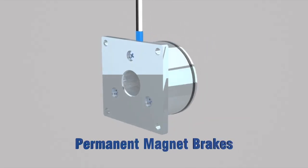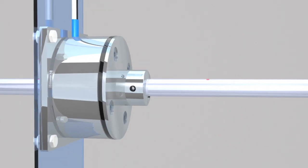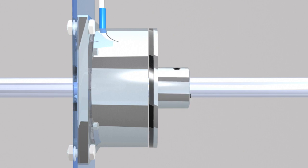Permanent magnet brakes. Electromagnetic direct current permanent magnet brakes operate similar to spring-applied brakes but have some unique properties.